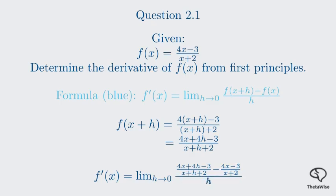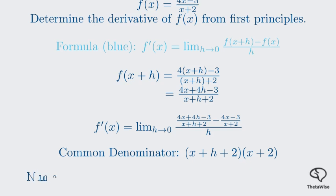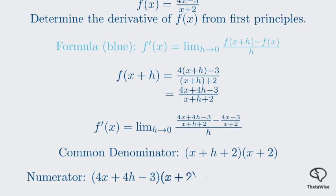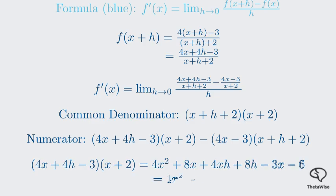Our goal is to simplify this expression. Let's focus on the numerator. We need to combine the two fractions by finding a common denominator. The common denominator is the product of the two denominators. We multiply the terms to get 4x plus 4h minus 3, times x plus 2, minus the quantity 4x minus 3, times x plus h plus 2. Next, we expand both products in the numerator.